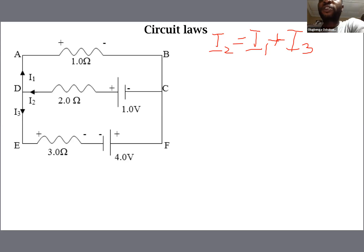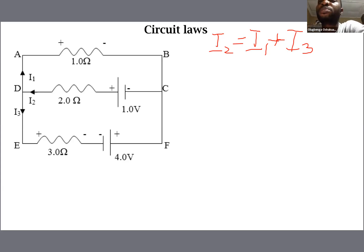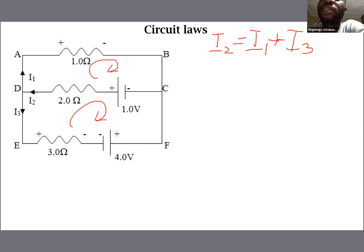Contrary to the previous examples, we are not given the direction with which we maneuver the loop — we can just decide ourselves. Let's go clockwise. Let's call this Loop A, and let's call this Loop B.